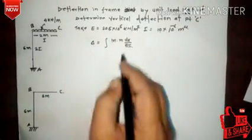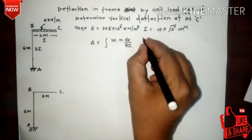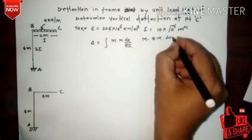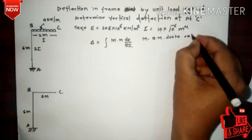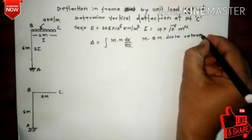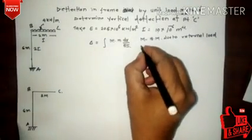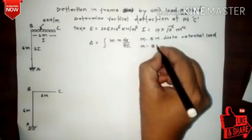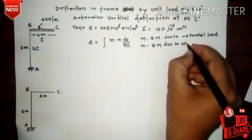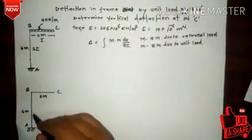By this method, delta is equal to the integration of M times m times dx divided by EI. Capital M is the bending moment due to external load, and small m is the bending moment due to the unit load.